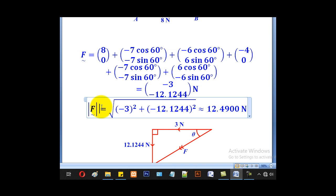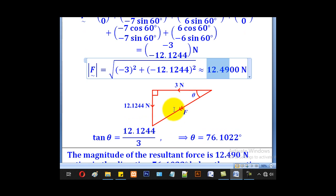So get the magnitude. It will be 3 squared plus 12.1244 squared, everything under root, to give you 12.4900. So that will be your magnitude of the resultant.